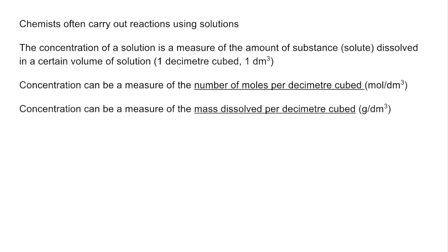That amount of substance could be measured in the number of moles, so concentration can be a measure of how many moles per decimetre cubed — with units mol/dm³. Alternatively, concentration could be a measure of the mass dissolved in a decimetre cubed, which would have units g/dm³.